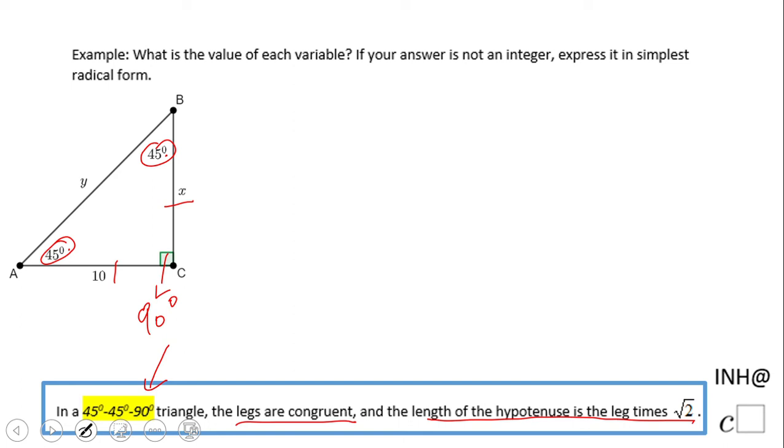So in other words, here we have, this is 10, right, because it's an isosceles triangle, the legs are equal. And this y here is going to be that leg times square root of 2. This is the rule for this triangle.